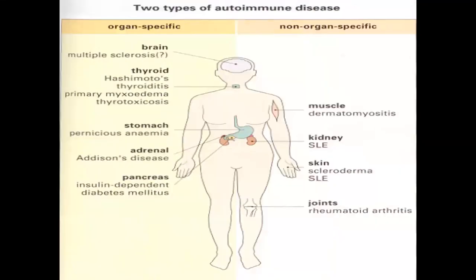There are two types of autoimmune diseases. There are autoimmune diseases which are organ-specific related, and there are autoimmune diseases which are non-organ-specific related.